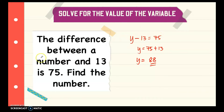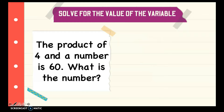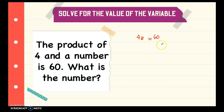Next, the product of 4 and a number is 60 — what is the number? When we say product, that means multiplication. We have 4 and a number represented as z, and the word 'is' means equals, so 4z equals 60. To isolate the variable, we transfer 4 to the other side. Since this is multiplication, when you transpose it becomes division, so z equals 60 divided by 4.